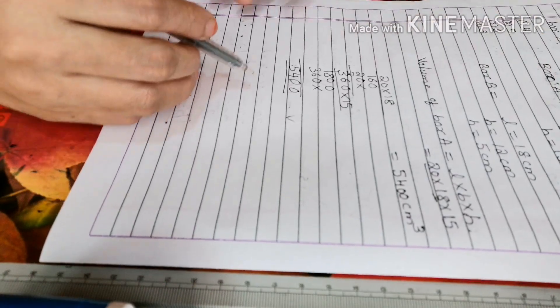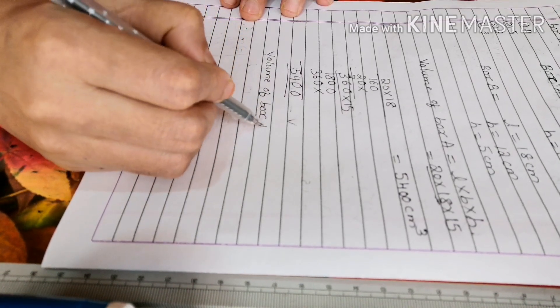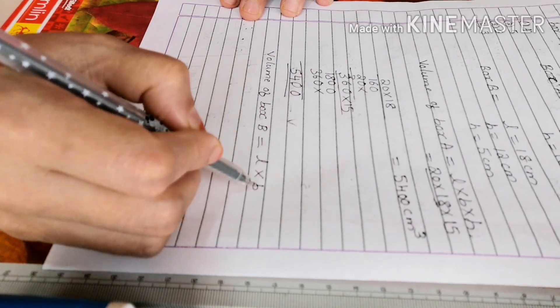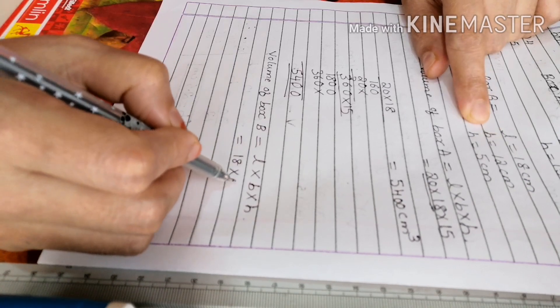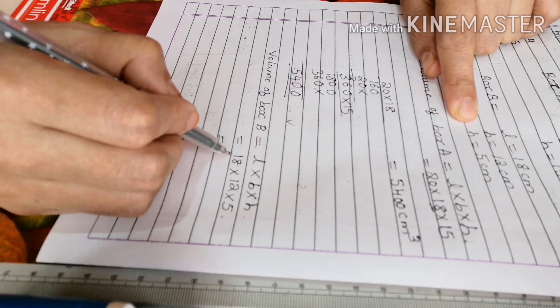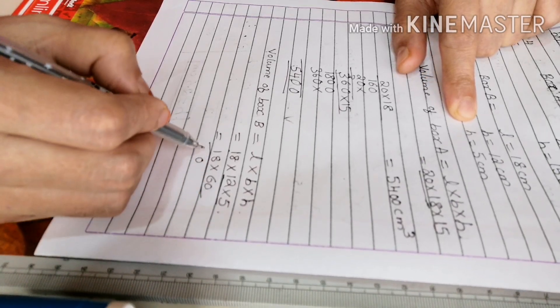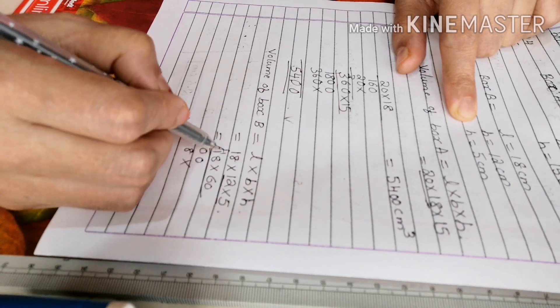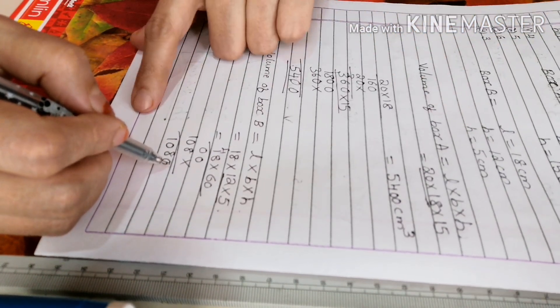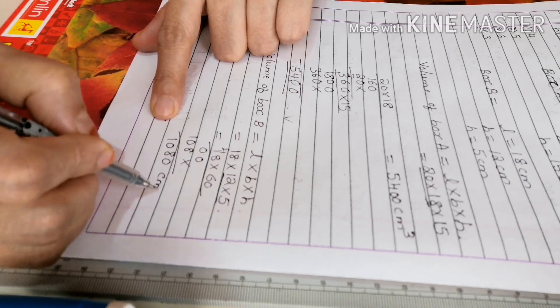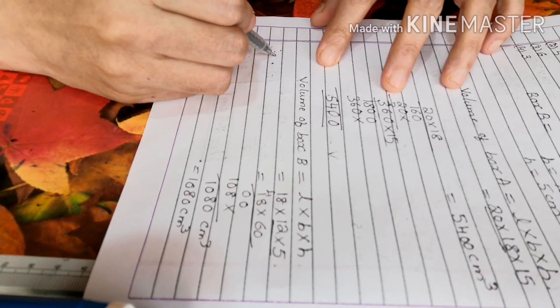Next, volume of box B, volume of box B, same formula L x B x H. Box B length is 18 cm, breadth 12 cm, height is 5 cm. So 12 x 5 is 60, 60 x 18. 0 8s are 0, 6 8s are 48, 1 8 is 8. 1080 centimeter cube.